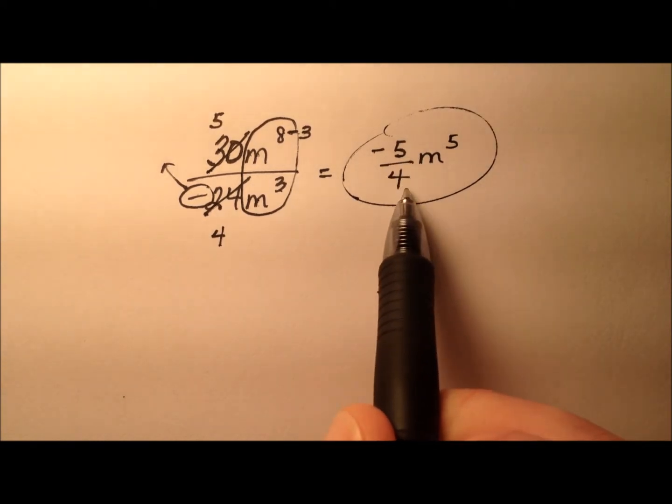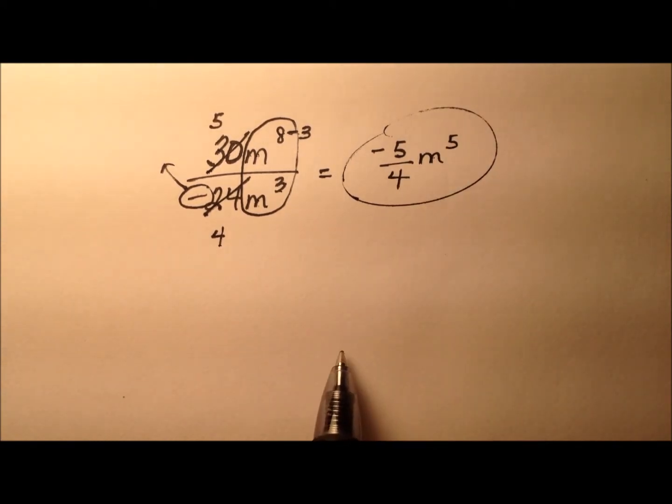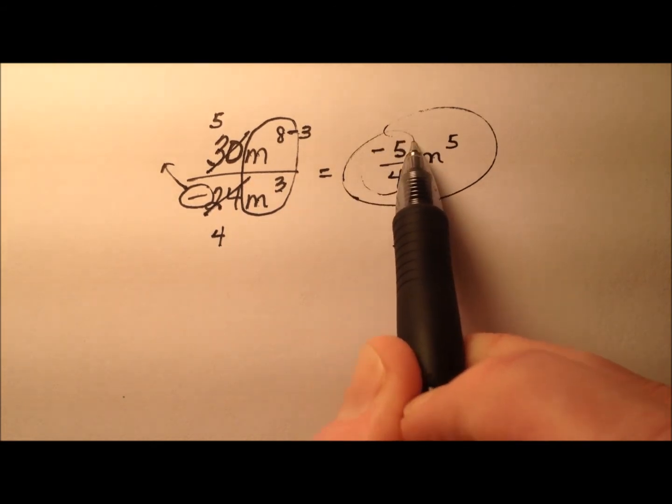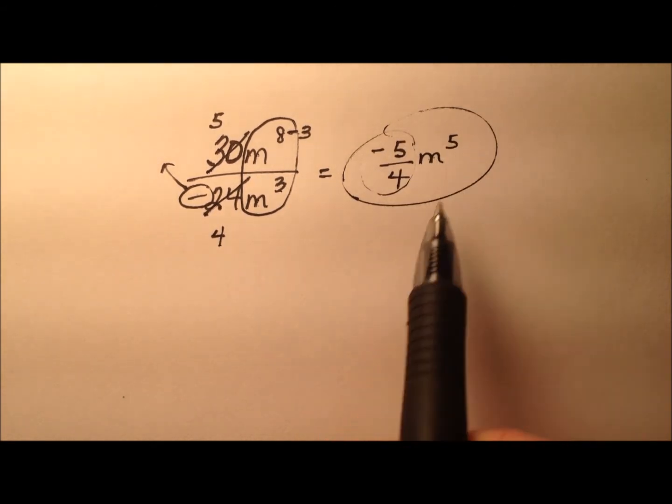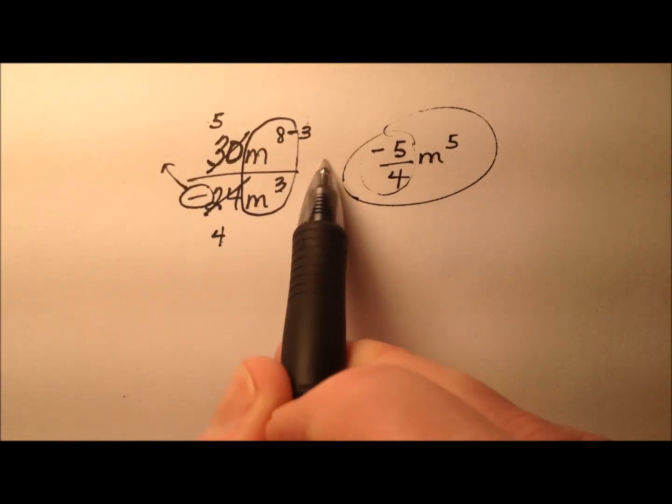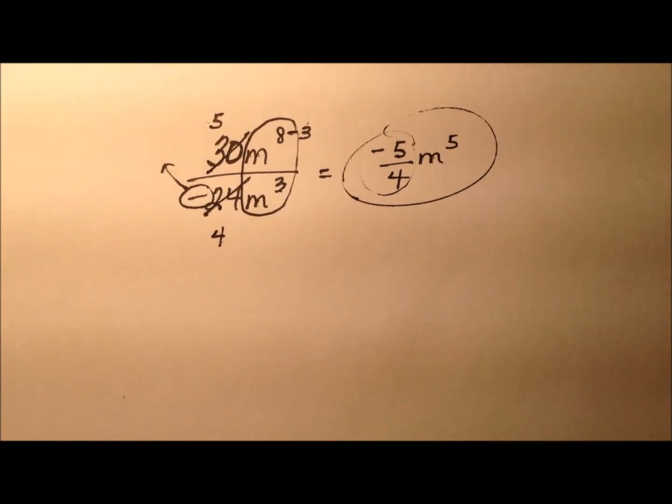It looks like negative 5 fourths m to the fifth is a monomial because it's the product of a number, negative 5 fourths, and a variable with a whole number exponent. So in this case, the quotient of these two monomials was itself a monomial.